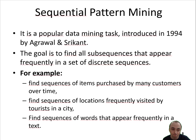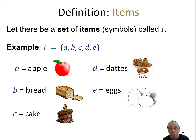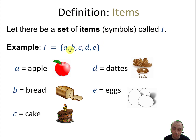Let me give you some definitions and then a formal definition of sequential pattern mining. First, we have a set of all items — all symbols in our data — and we call this I. Taking the shopping example, let's say we have a store with five types of products: A, B, C, D, E — A for apple, B for bread, C for cake, D for dates, and E for eggs. These are called items.